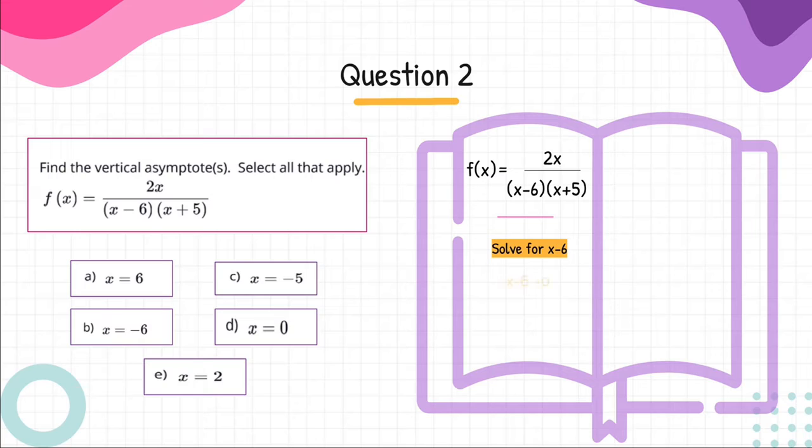Step 1: Set the factor x minus 6 in the denominator to zero and solve for x. x equals 6.